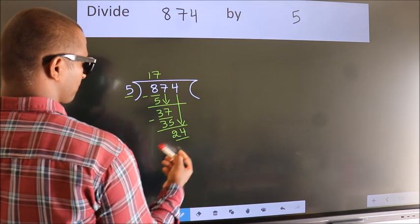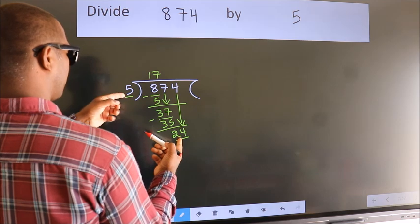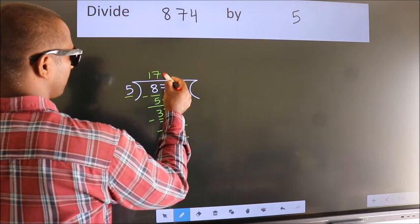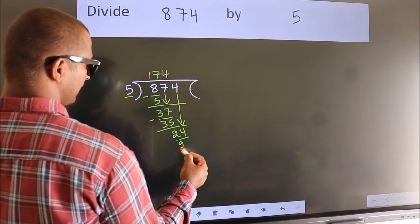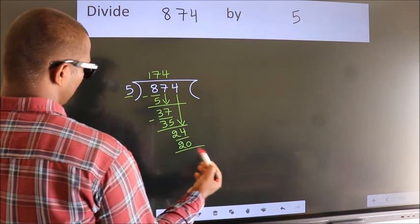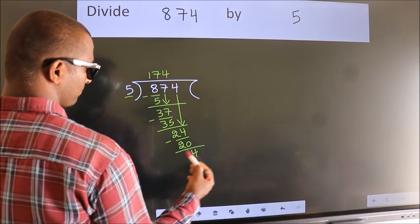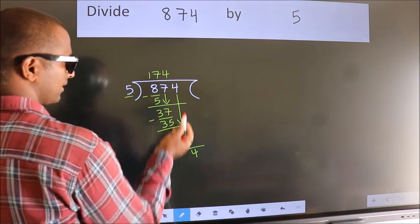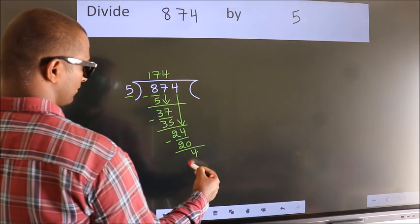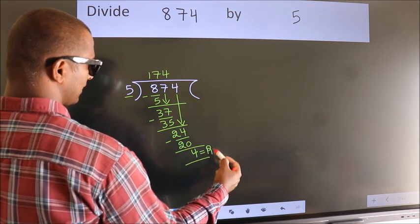So we have 24. A number close to 24 in the 5 times table is 5 fours, which is 20. Now we subtract — we get 4. There are no more numbers to bring down, so we stop here. This is our remainder.